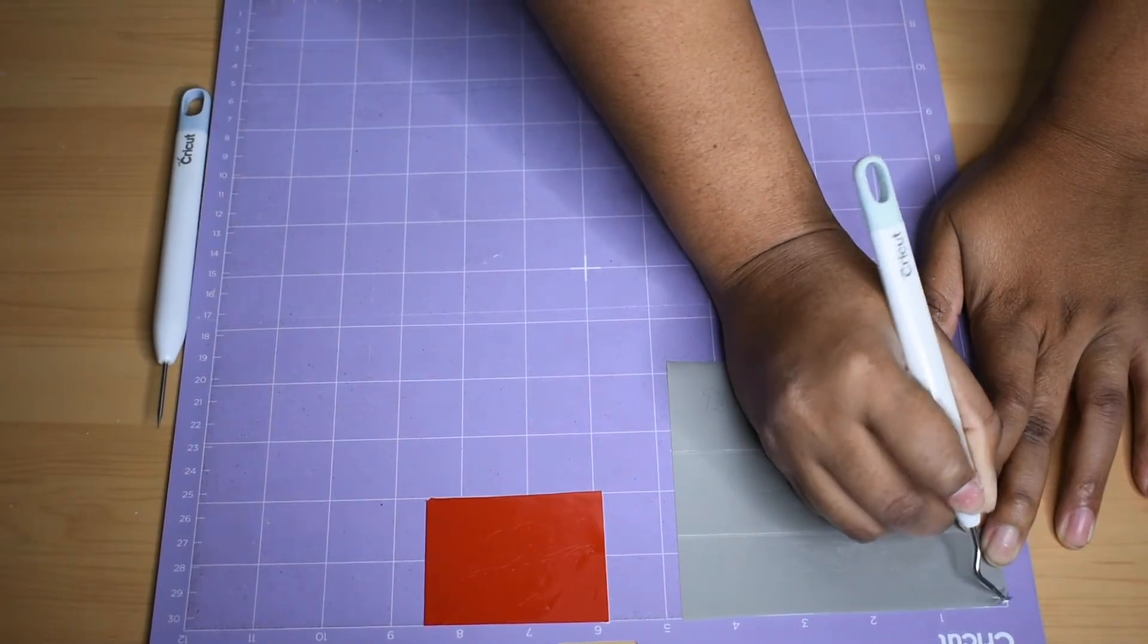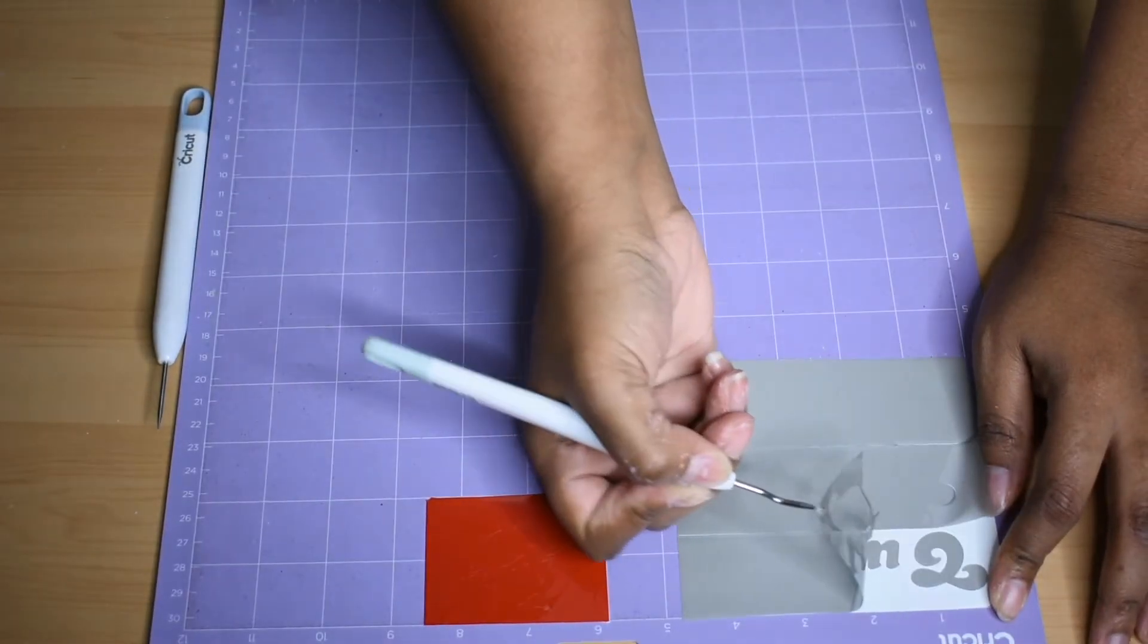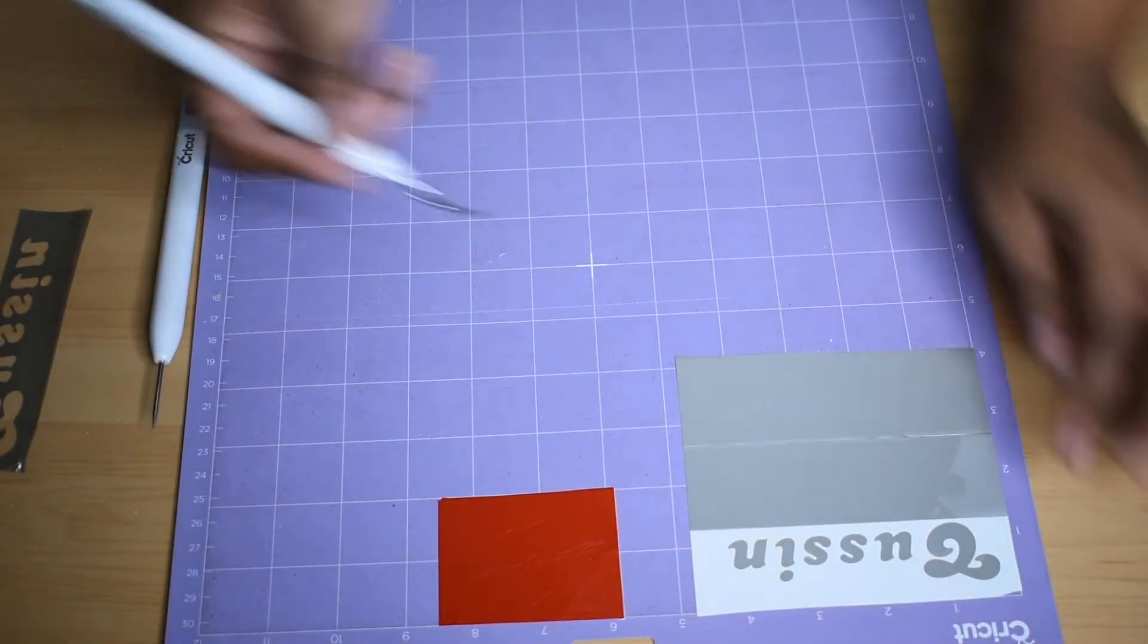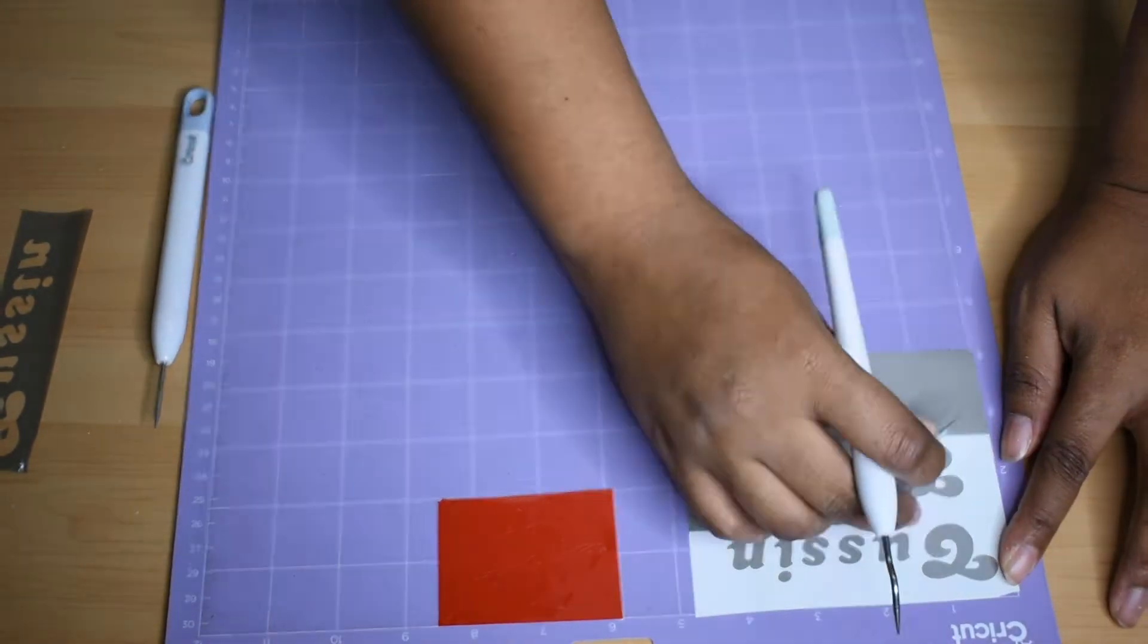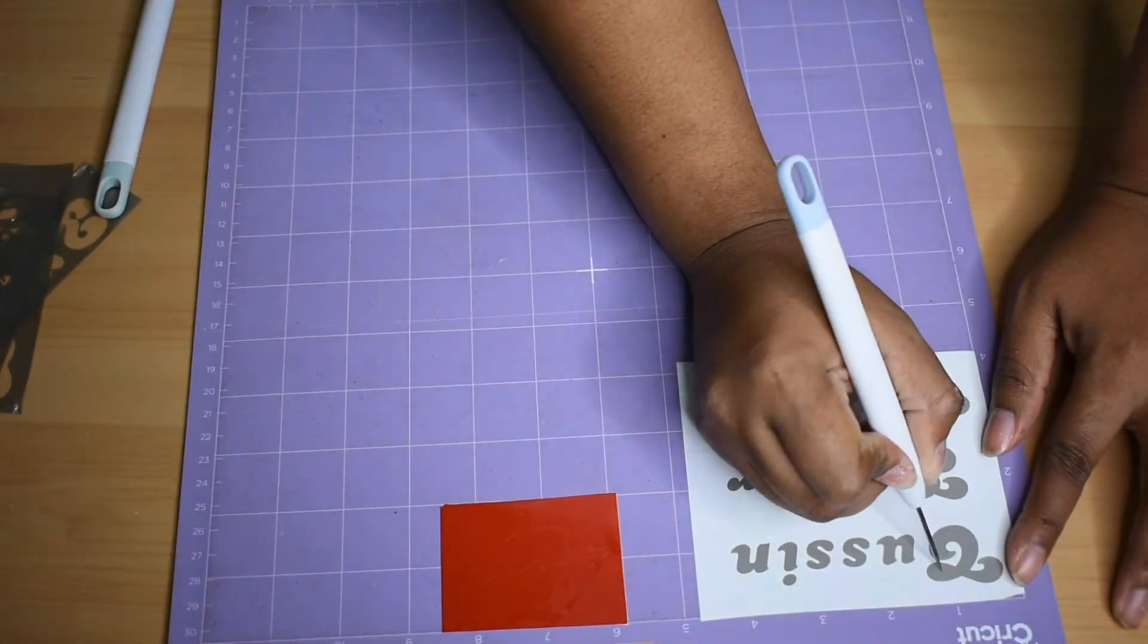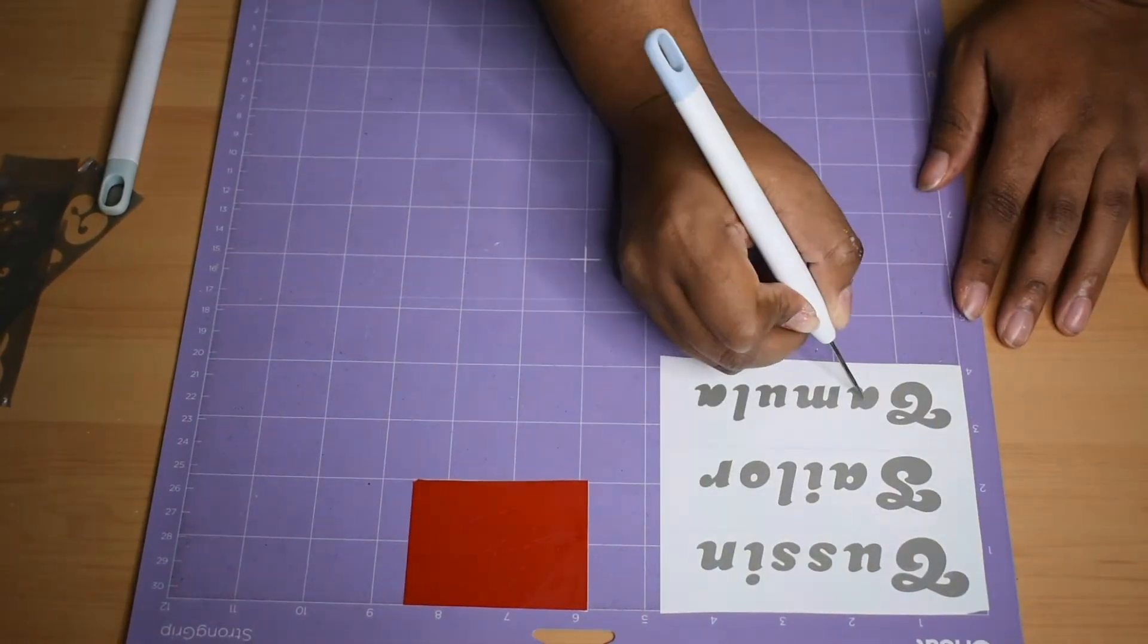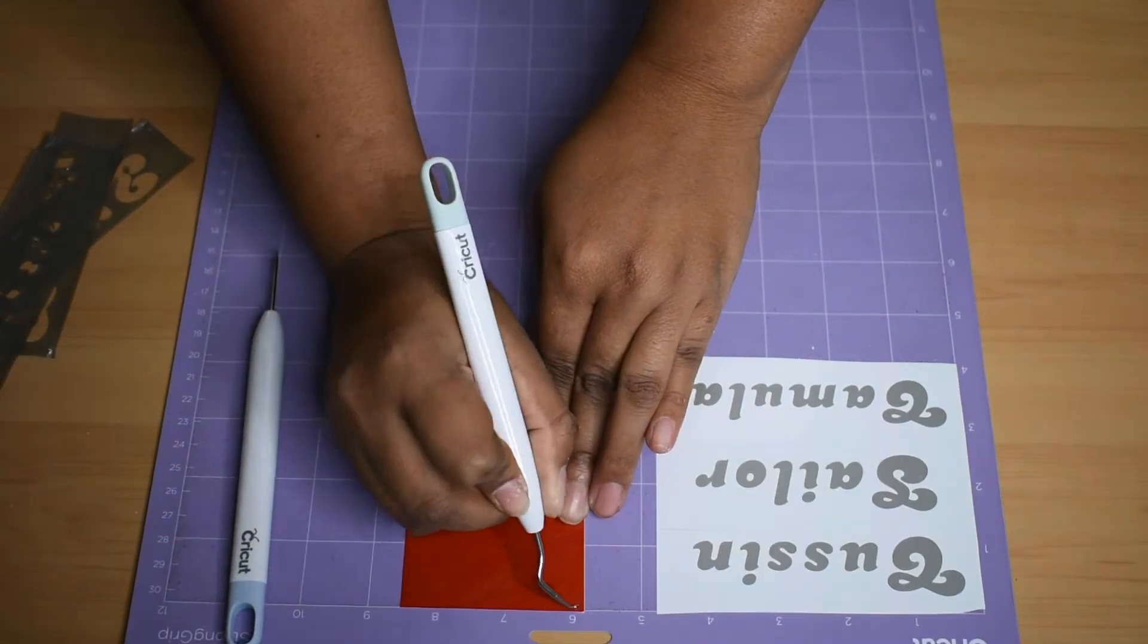Next, I am weeding the vinyl from the paper. So what will be left is the letters on the paper itself. I can't think of the name of the two, but I'm going to call the first two I'm using is a hook and the second one is like a pick. So I use the pick to get like the vinyl in the O's and the little, you know, you see it when I'm talking about.